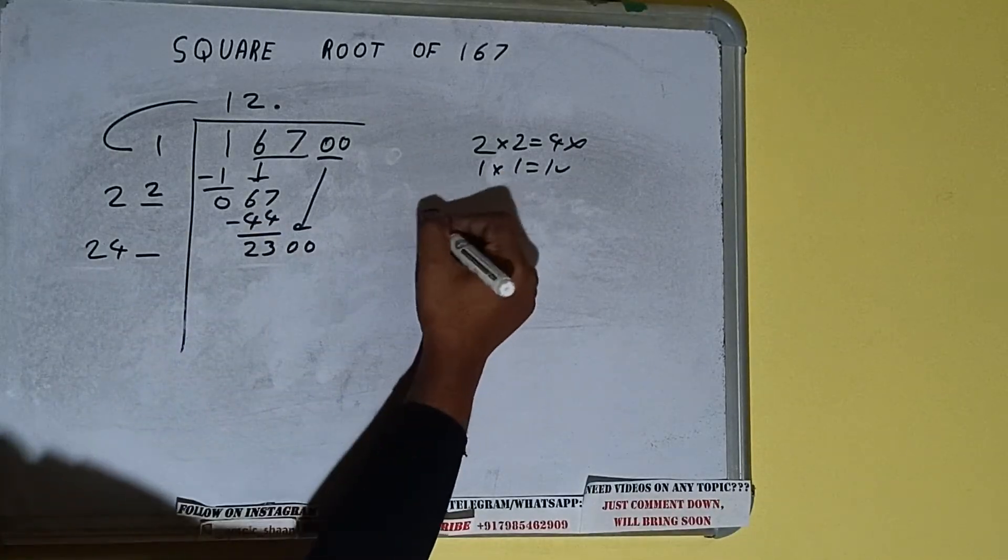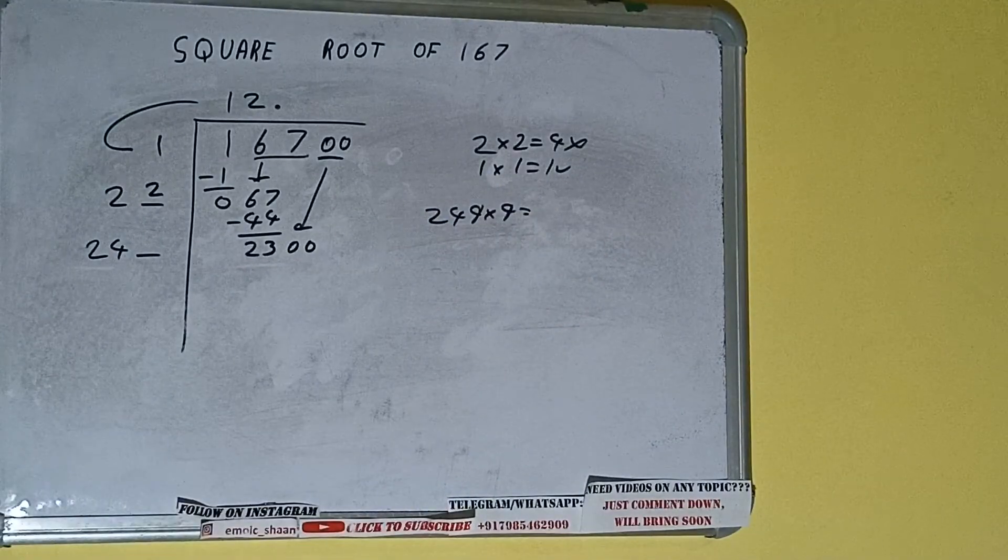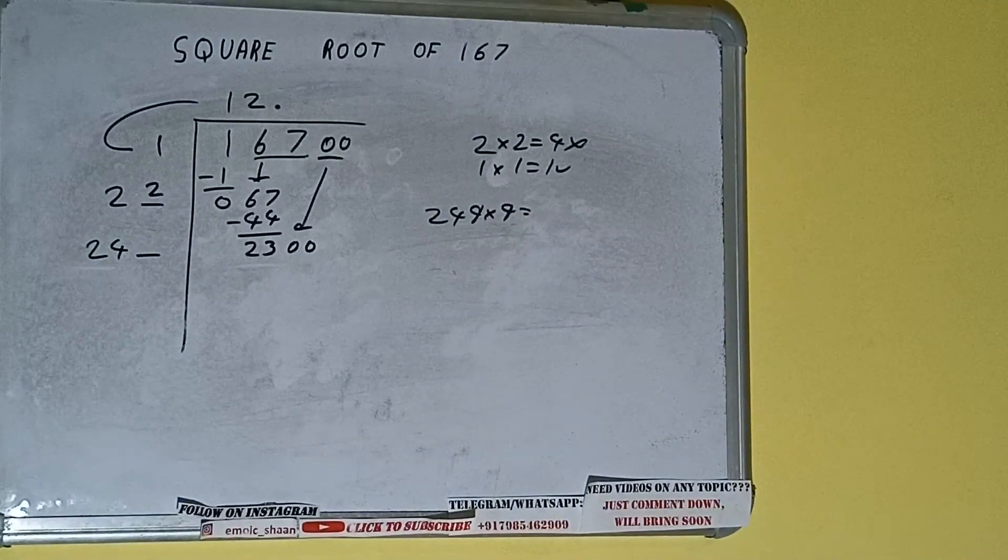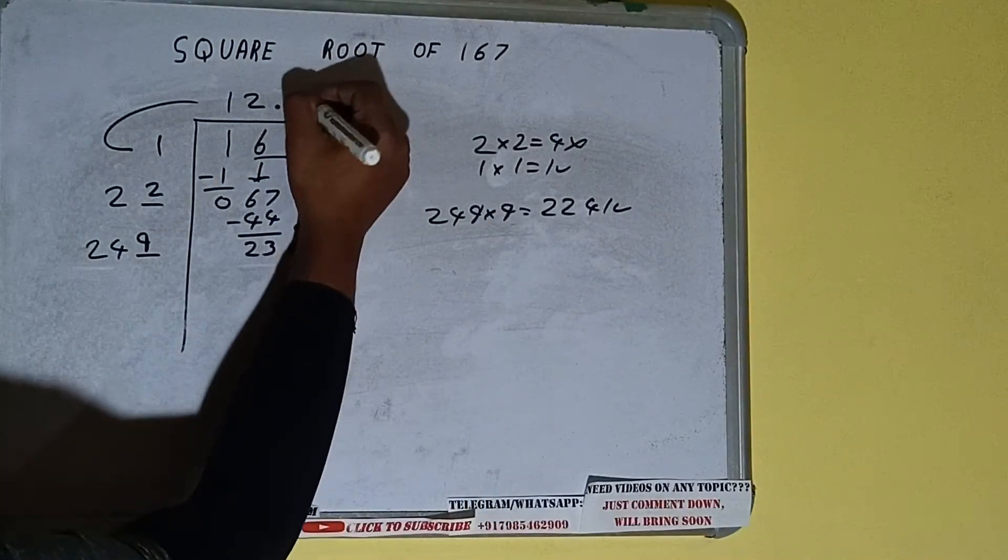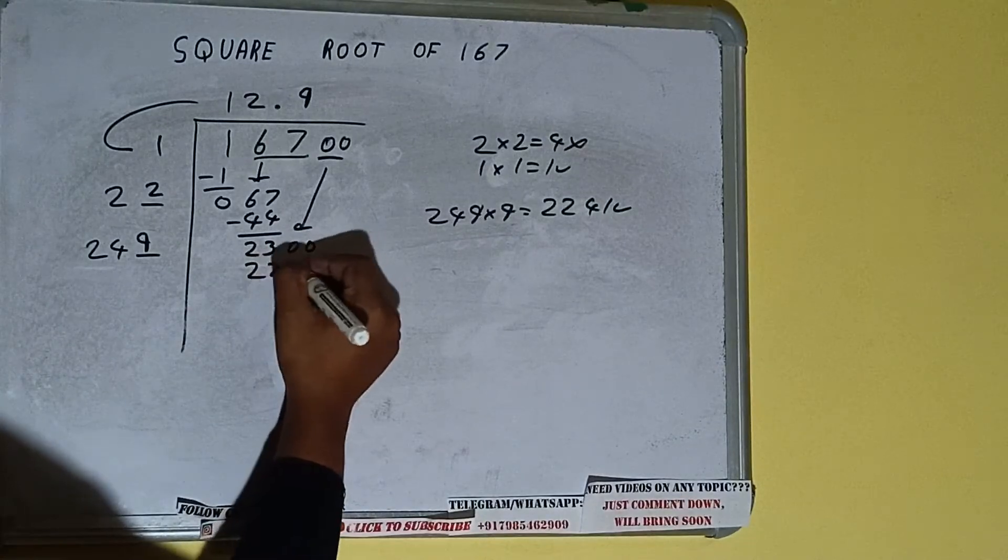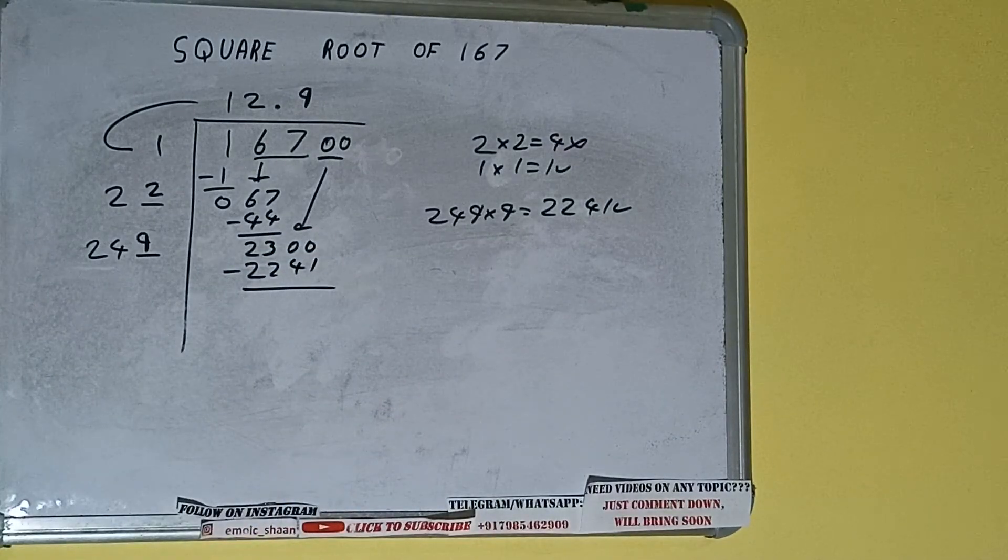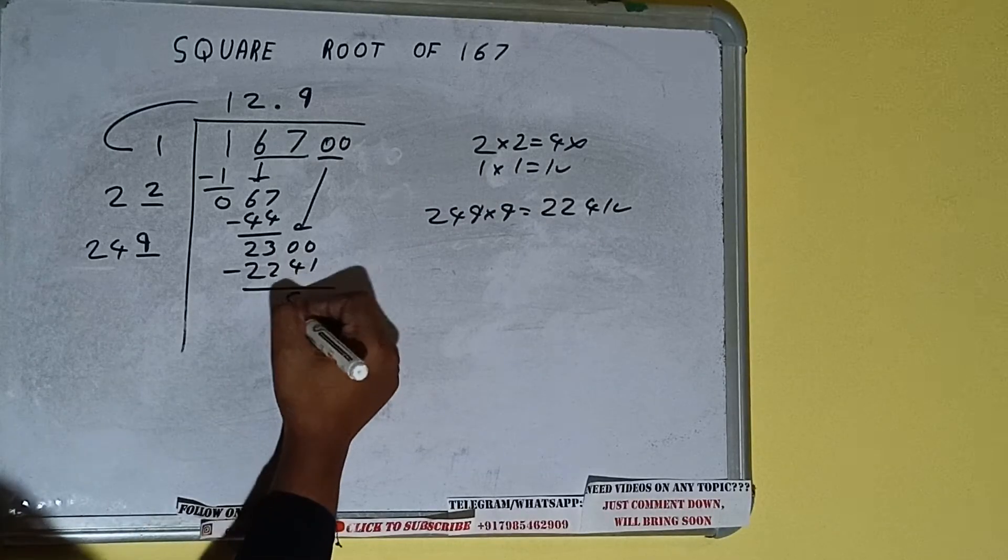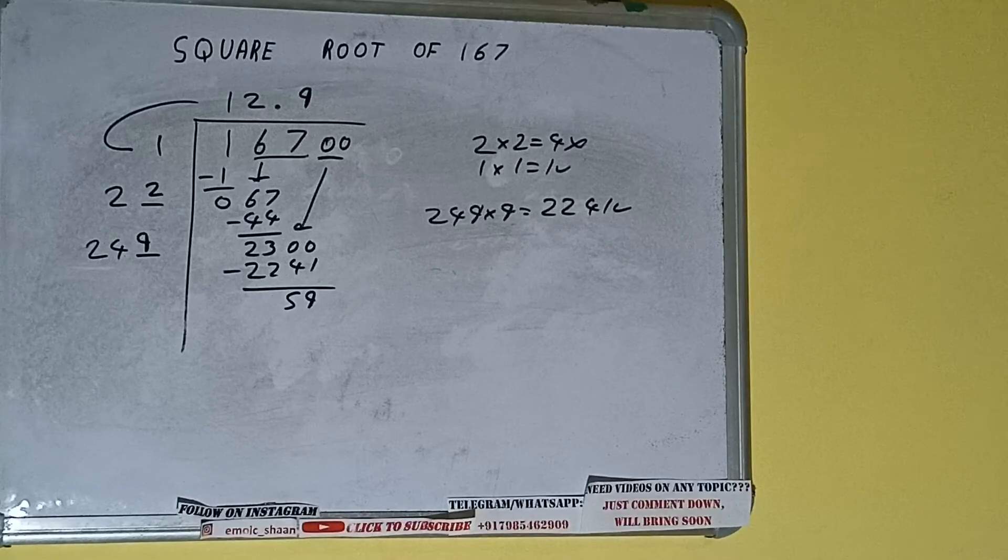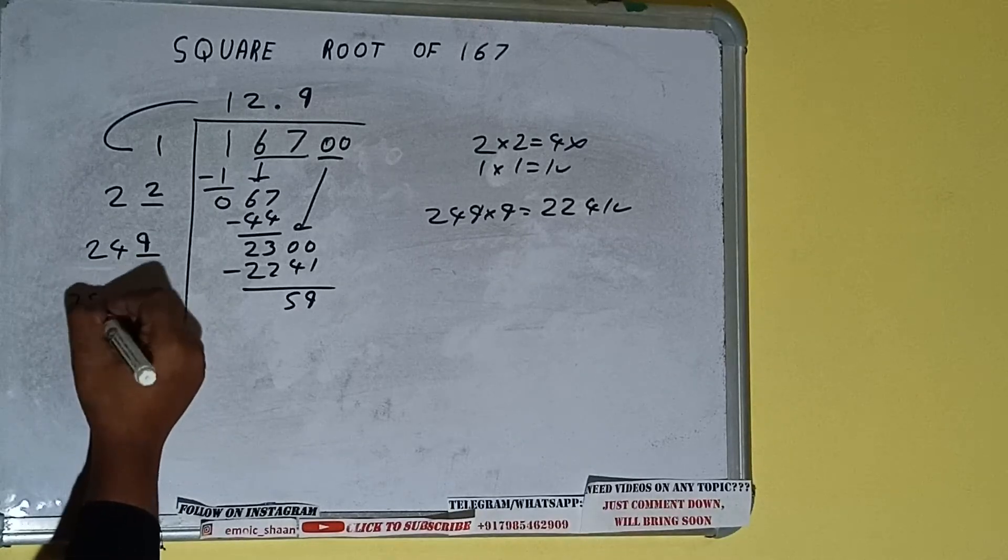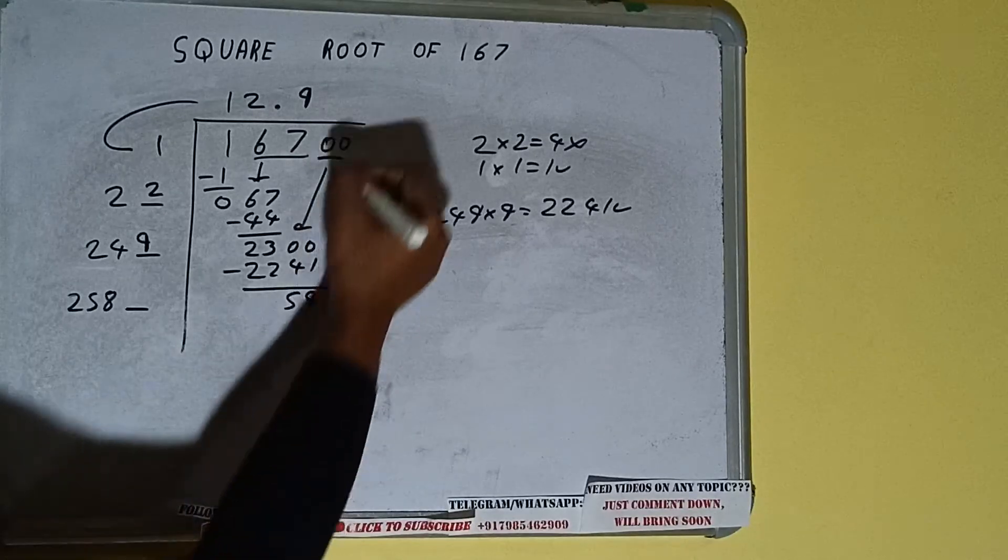So 24 9 times is 216. So we can try 9 times, 249 into 9 we can try. And we'll be having 2241 which is good to take. So 9 here and 9 here. 2241 subtract it. And we'll be left with 59. Now 249 into 9 we did so add both. So 249 plus 9 will be 258 and one digit extra. And this number we need to make it big.